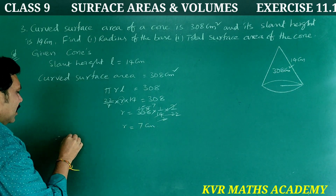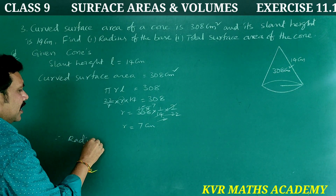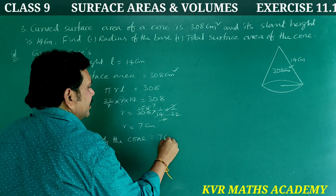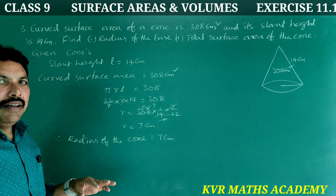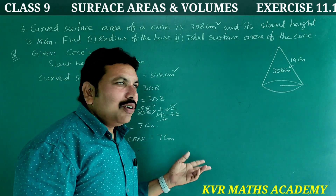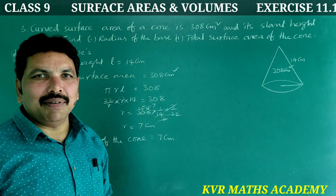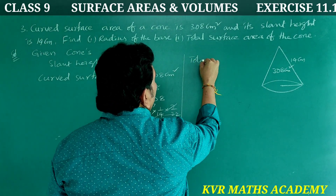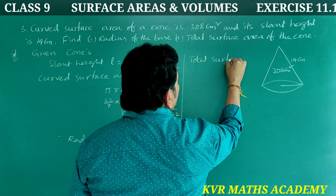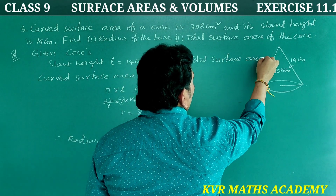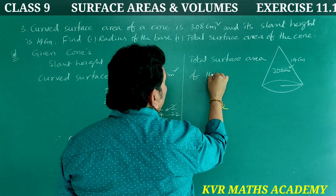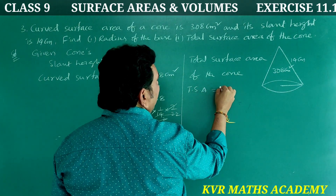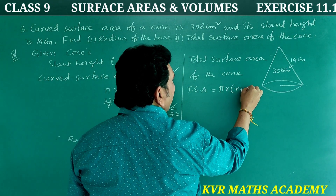Therefore, the radius of the cone is equal to 7 cm. Now we are going to find the total surface area of the cone. What is the formula for TSA?